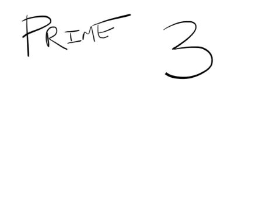A prime number is a number that has only itself and the number one as its factors. For example, the number three — what are the factors of three? What are the numbers that times together to equal three? Not plus together, times together.